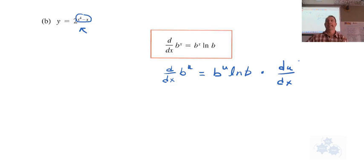That make sense? So the derivative of b to the x is b to the x ln b. If we have b to the u, it's b to the u ln b times the derivative of u. So that's the chain rule part.